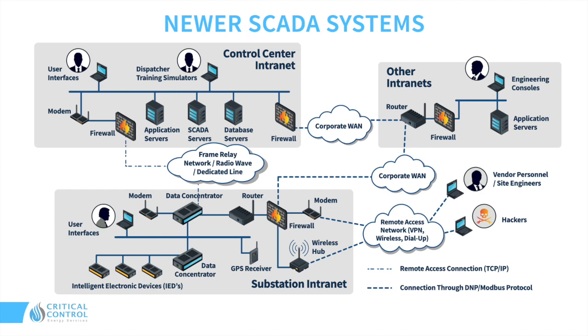You'll certainly see a control center intranet, and then you'll have other intranets maybe connected by corporate WAN — frame relay networks, radio wave networks, dedicated lines. They're all then supported into one big network using some kind of security or firewalls to keep the data and security necessary for a SCADA system.